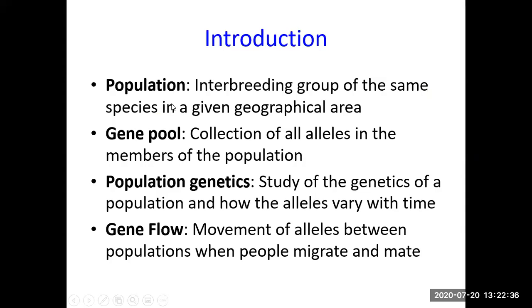A recap of some terms before we go into details. Population means a group of individuals who can interbreed amongst themselves and live at a particular time in a particular area — a definite geographical area where they can interbreed. Gene pool means the sum total of all the alleles and all the genes of all the individuals in a population.